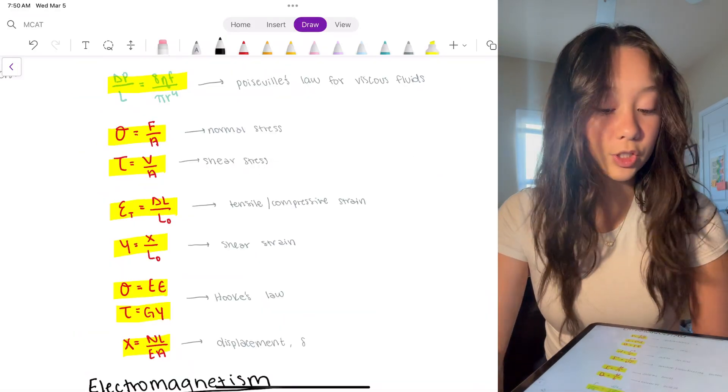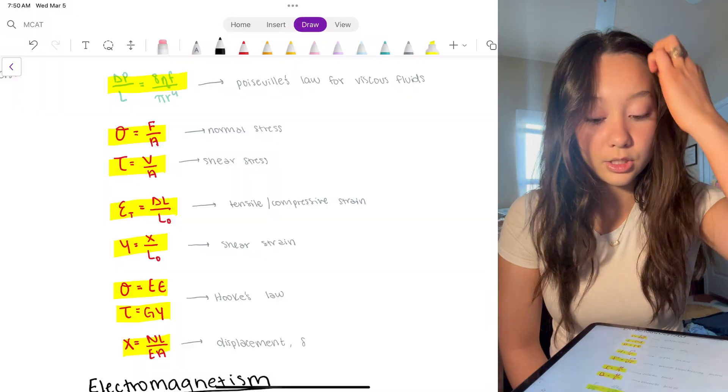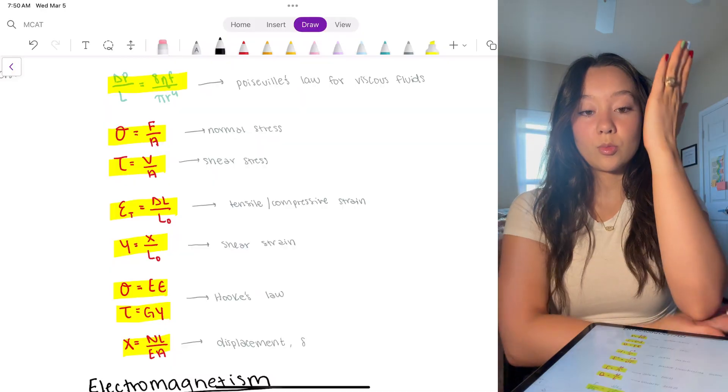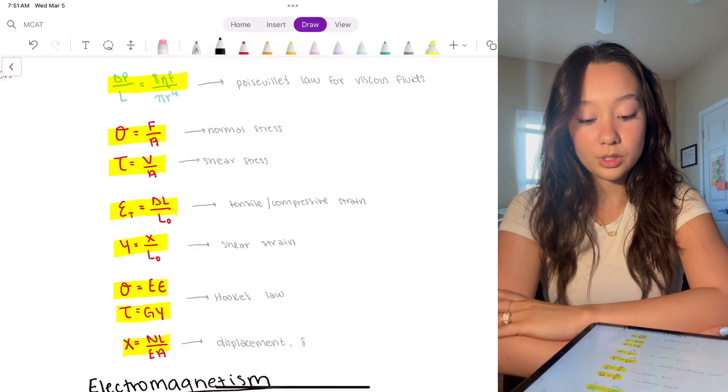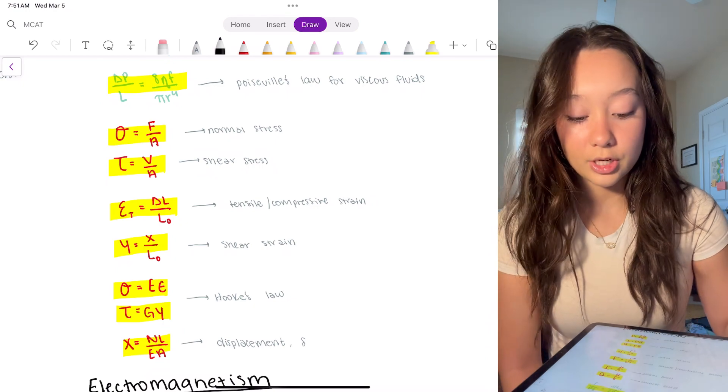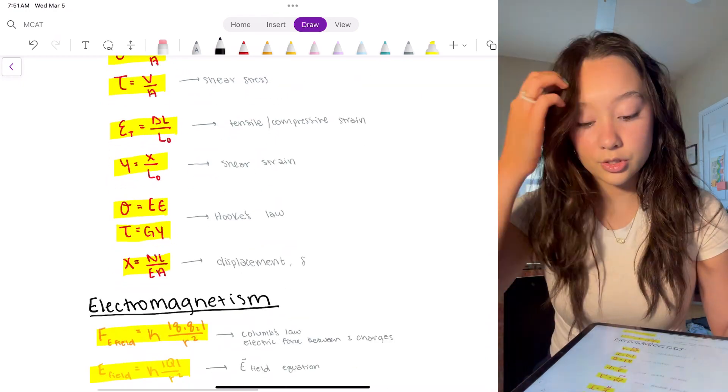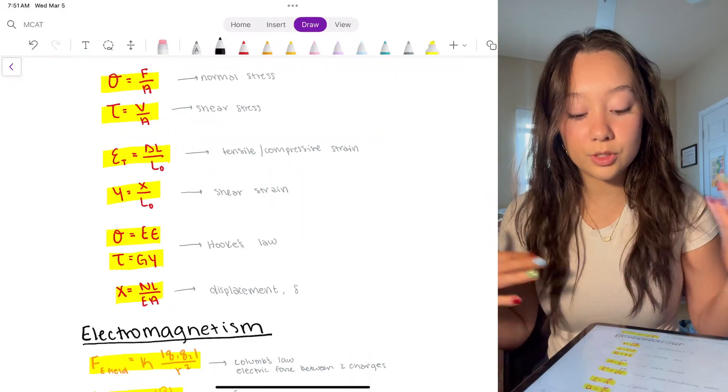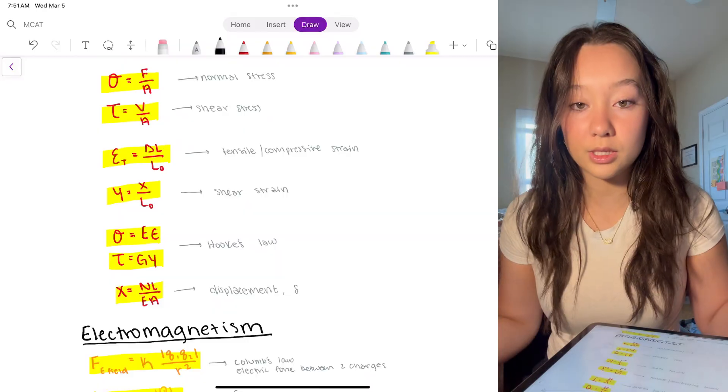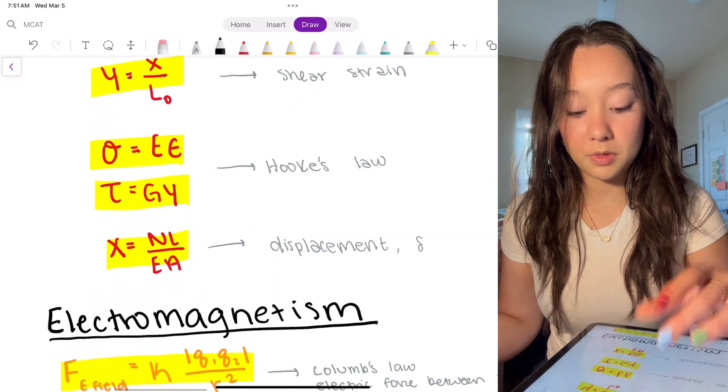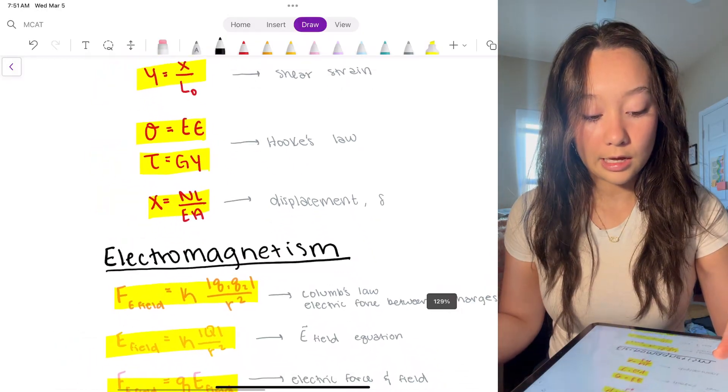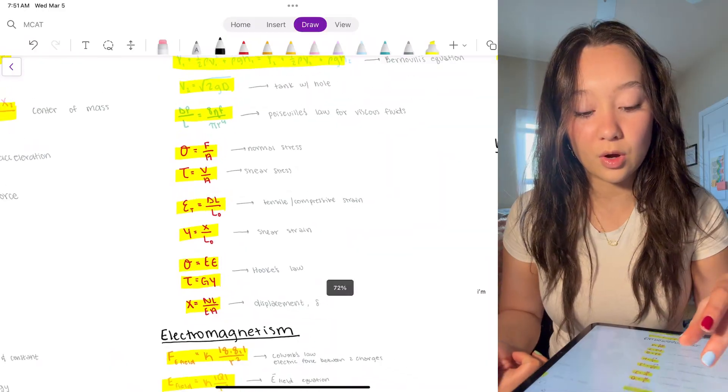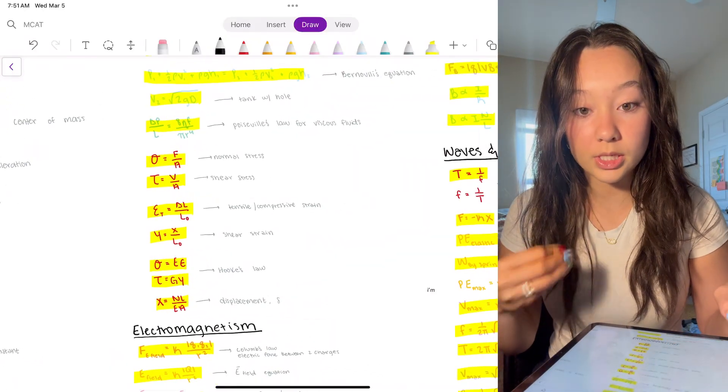Normal stress is the same as pressure force over area. Shear stress, they don't get a lot into shear stuff from my experience, but shear is just the opposite of normal. Normal stress going to the parallel and shear stress going this way, shearing stress. Tensile, compressive strain, change in L over L. Shear strain, gamma is x over the initial L. Hooke's law, that's important to know. Hooke's law is basically just introducing E, which is the elastic modulus, and then the same thing as G, which is the shear modulus. Displacement, again these aren't super high yields, so I don't know if I would worry about spending too much time hardcore memorizing these.